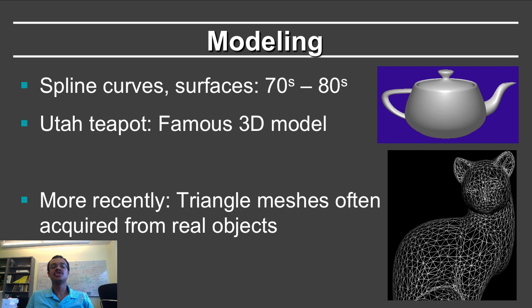Geometric modeling is the process of creating 3D geometry which can then be used in a computer graphics system. In the 70s and 80s, one of the major developments was the creation of spline curves and surfaces. These were geometric methods that enabled the Utah teapot — as it's known — to be created, developed at the University of Utah. The teapot has lots of interesting geometry: it's not a genus zero surface, it has a handle and a spout, and all of this could be represented with spline models.